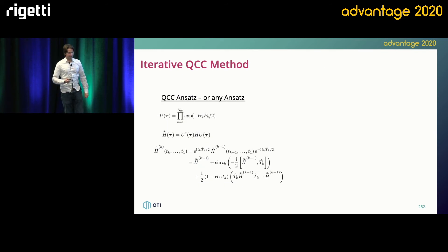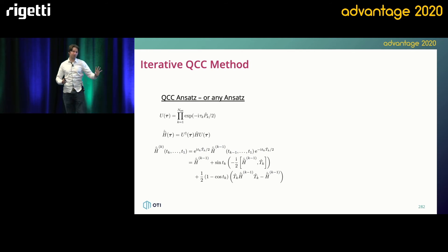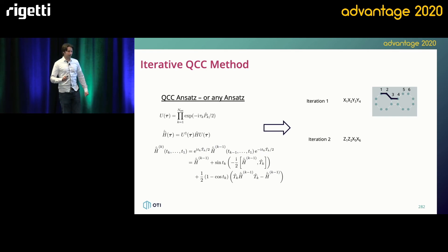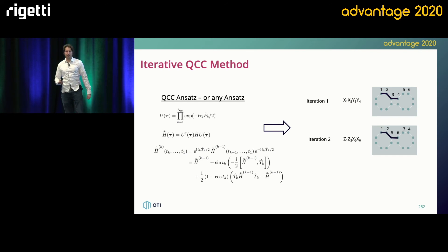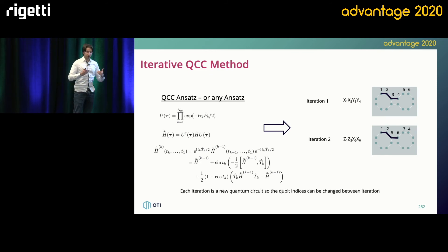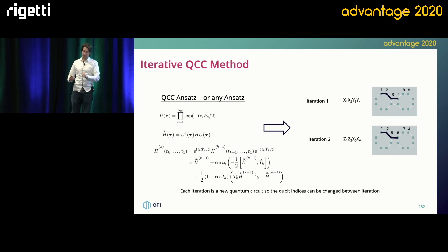The math behind this is that all qubit coupled cluster ansätze are arbitrarily generated. If we take our first generator, we once again get a linear connectivity. When we optimize our second entangler, we're able to swap the indices of the qubit when optimizing those parameters. This allows us — if the connectivity of the quantum computer is an issue — to generate a purely linear connection.